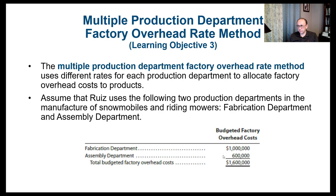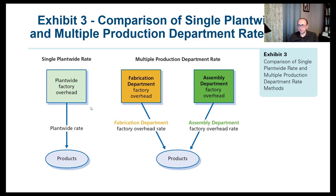Out of the $1.6 million total budgeted overhead, $1 million is allocated to the fabrication department and $600,000 to the assembly department, totaling $1.6 million. Comparing the two methods: in the single plant-wide rate, we allocate factory overhead based on one rate across all products. In the multiple production department rate method, we calculate a separate factory overhead rate for each department — one for fabrication and one for assembly — and then use those rates to allocate overhead to products.